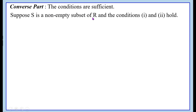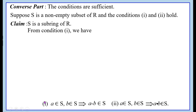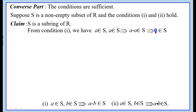The converse part — the conditions are sufficient. Suppose S is a non-empty subset of R and conditions 1 and 2 hold in S. We have to show that S is a sub-ring of R. From condition 1, taking A = B, we get A belongs to S implies A minus A belongs to S. Since A minus A is 0, this shows that 0 belongs to S — the identity element exists in S.